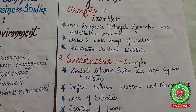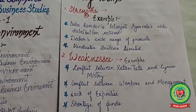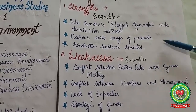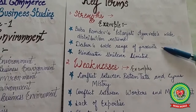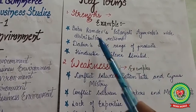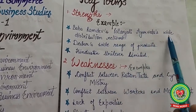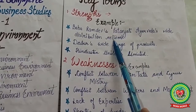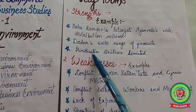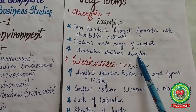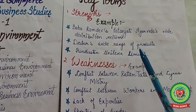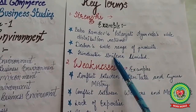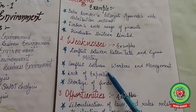The first key term is strength. Strength is the capability or capacity of the company to produce goods and services and sell them in the market. For example, Baba Ram Dev's Patanjali Ayurveda has a wide distribution network. Similarly, Dabur and Hindustan Unilever Limited also have a countrywide distribution network to sell their products — these are the strengths of these companies.